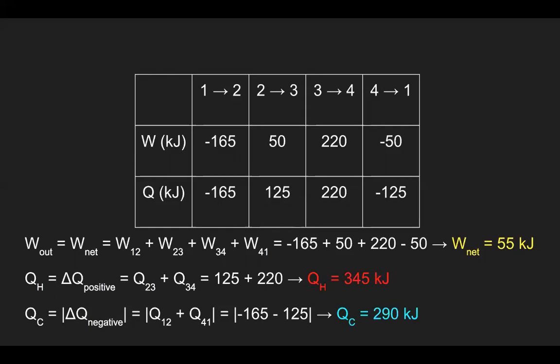For the heat from the hot reservoir, we take the positive heat values in the cycle. In this case, that's from two to three and three to four, which sum to 345 kilojoules. The heat from the cold reservoir is the magnitude of the sum of the negative heat values — from one to two and four to one — giving 290 kilojoules.